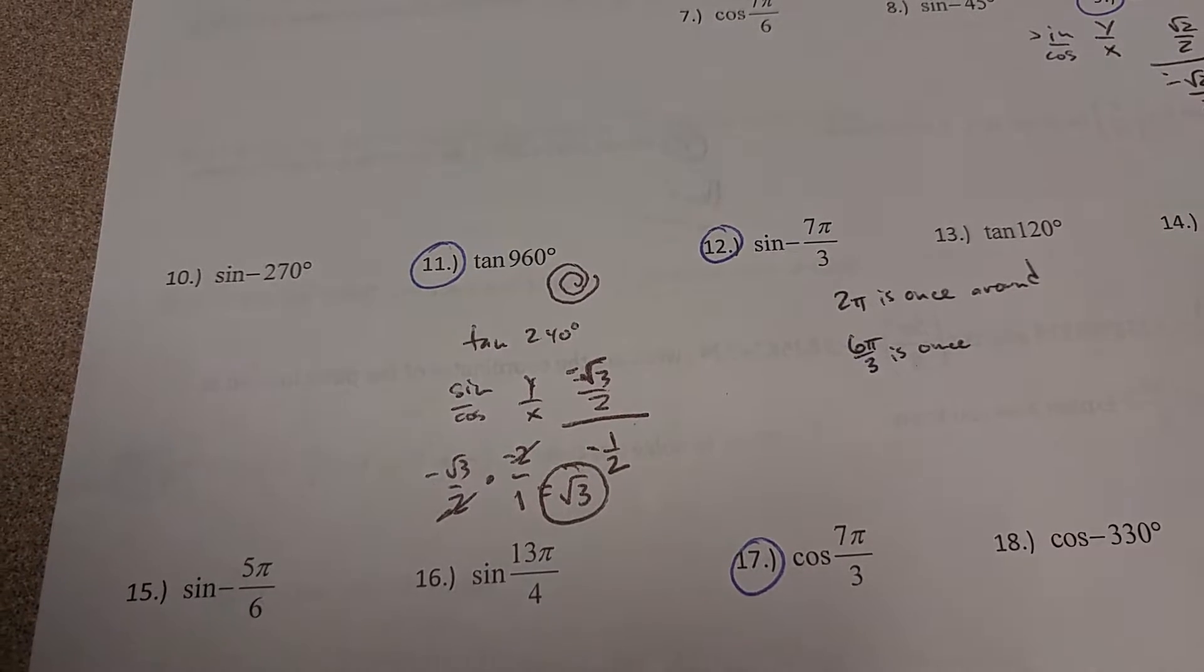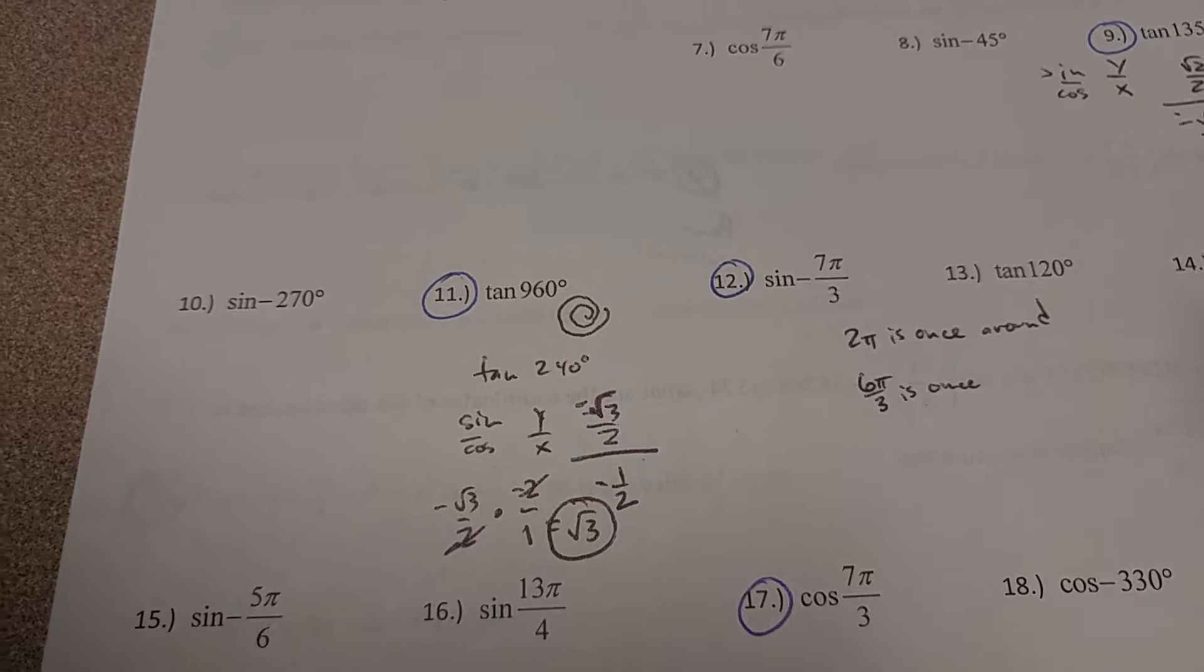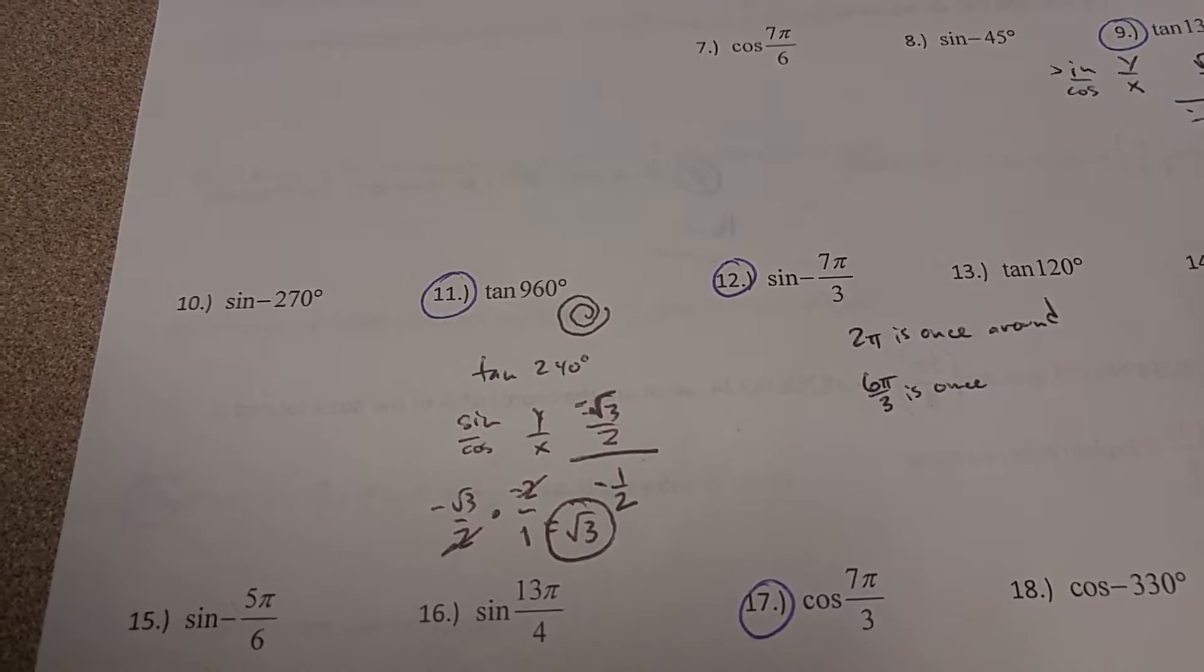So if I'm trying to go negative 7π over 3, I'm going to go one whole time around, that gets me to 6π over 3, and I need to go one more, which will get me to 7π over 3.